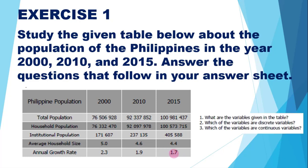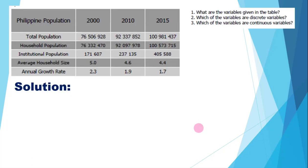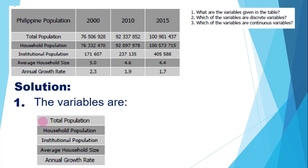Now we have to answer the following questions. Question 1: What are the variables given in the table? Question 2: Which of the variables are discrete variables? Question 3: Which of the variables are continuous variables? For number 1, these are the 5 variables given in the table: total population, household population, institutional population, average household size, and annual growth rate.